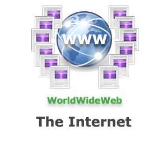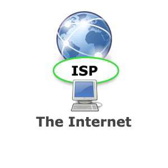Connections to the internet are made via an internet service provider, or ISP. These are organisations that provide a powerful computer with the necessary technology to connect efficiently to the internet. Users then connect to the ISP computer via some kind of telephone connection, dial-up or broadband, and the ISP computer handles the flow of data between individual users and the internet.